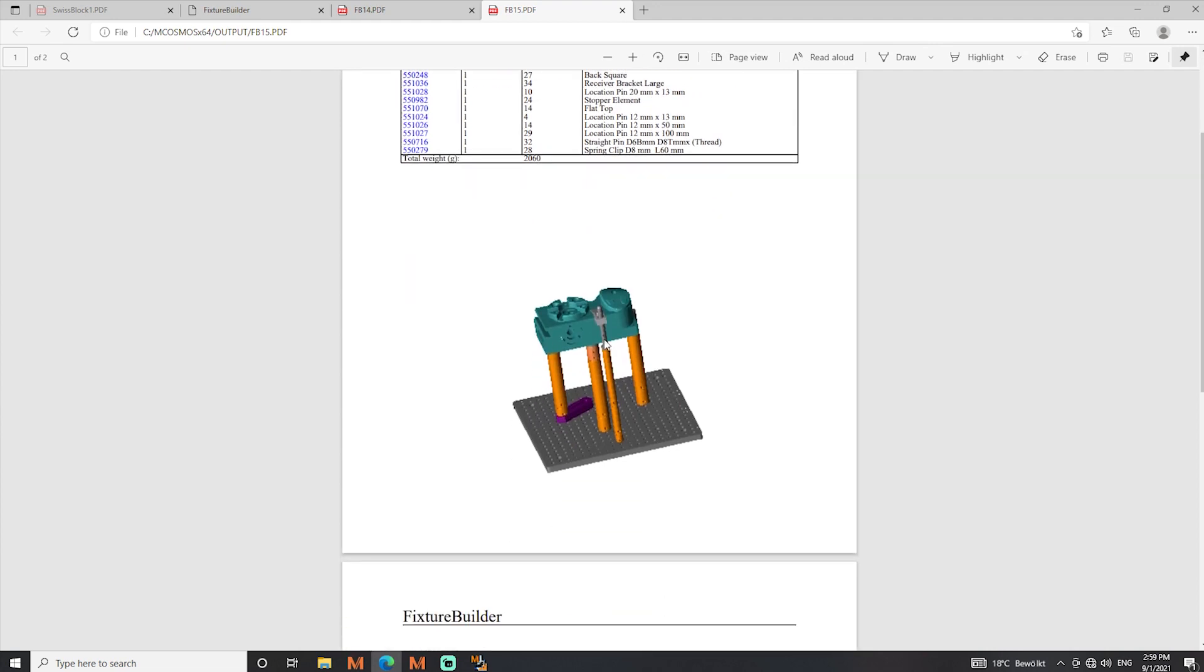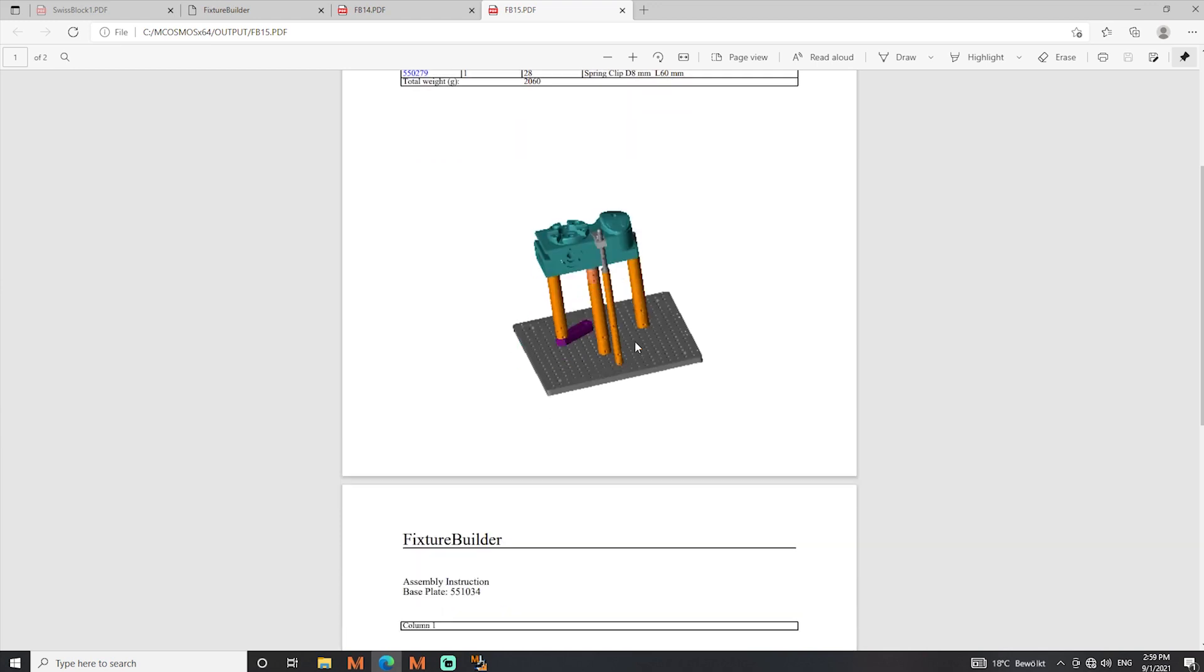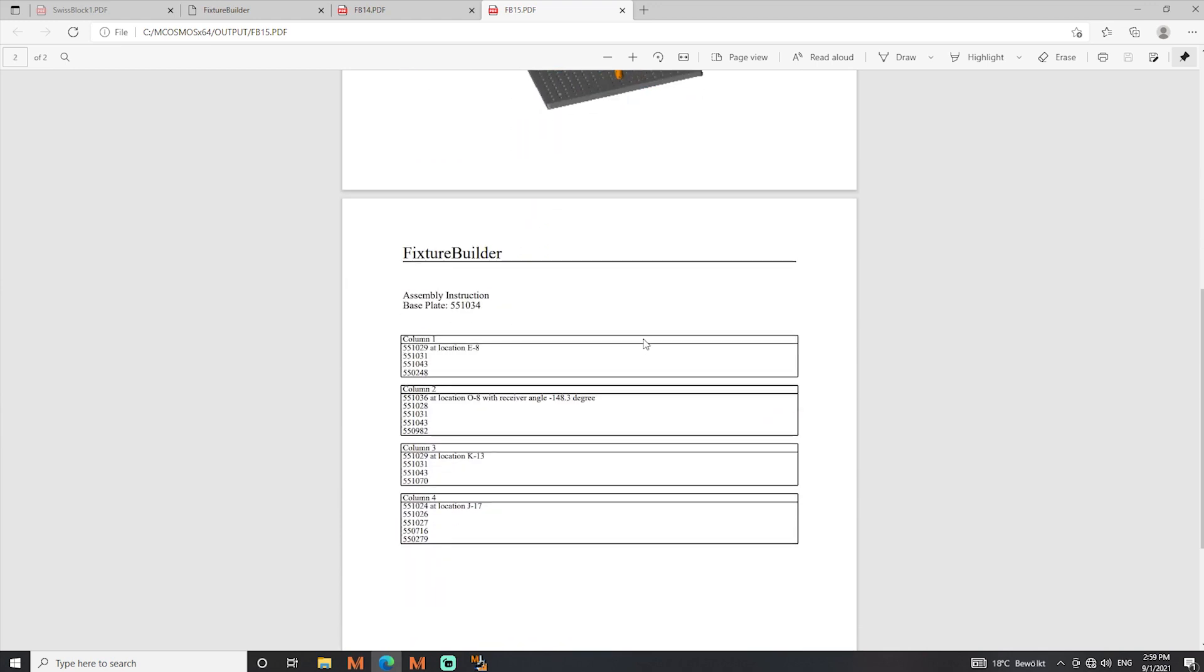We also got an image of our setup and if you choose the optional 3D PDF file you can rotate it and view it from all sides. Also you get an assembly instruction for each section including the coordinates on the base plates in regard of the alphanumeric markings on it.